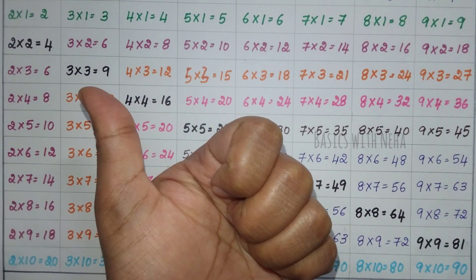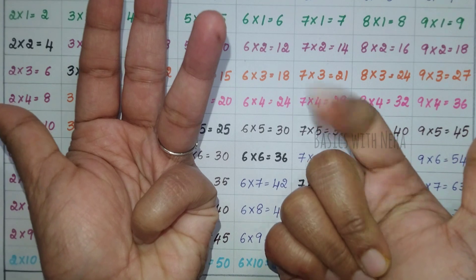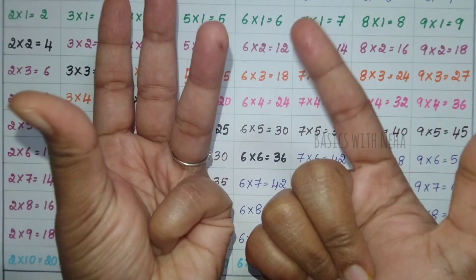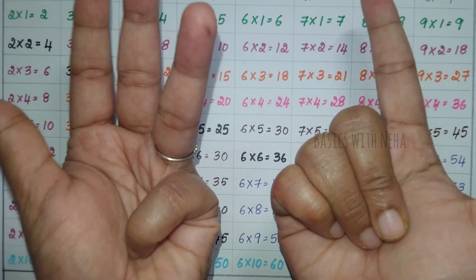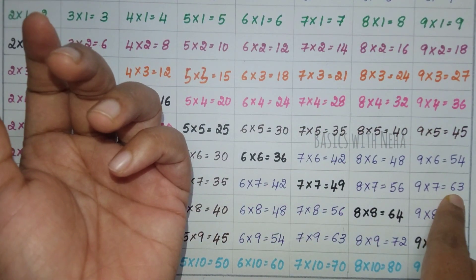Likewise, if I do 9×7s, it's 6, 7, 8, 9. 9×7s - 6, 7. So open fingers are 4, 5, 6 - that's 6. Three into one is 3. So it will be 63. The answer is 63.